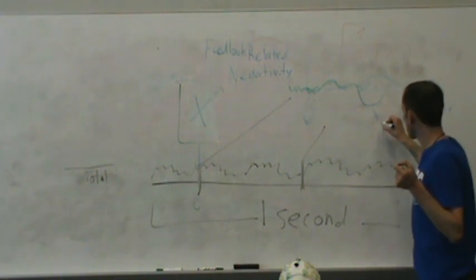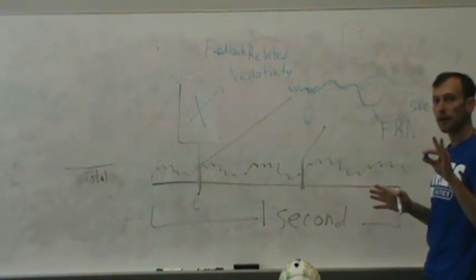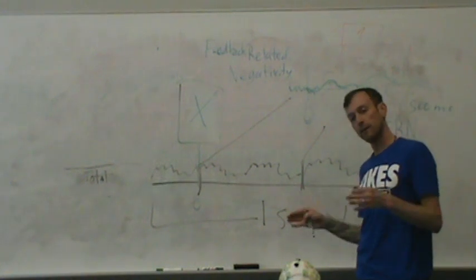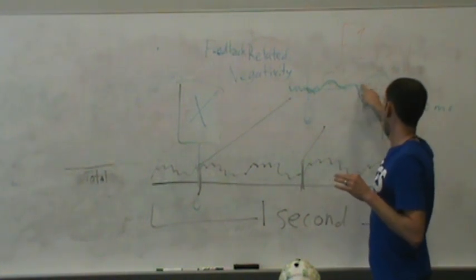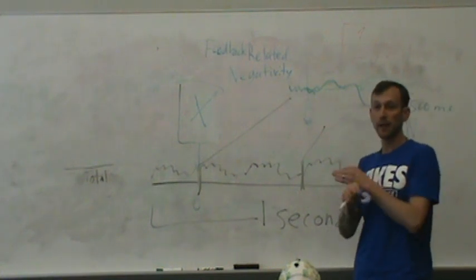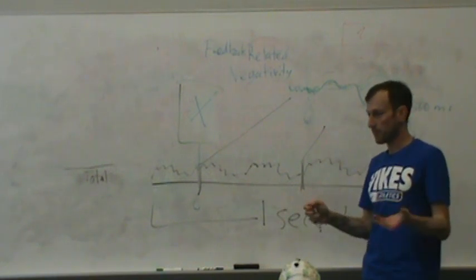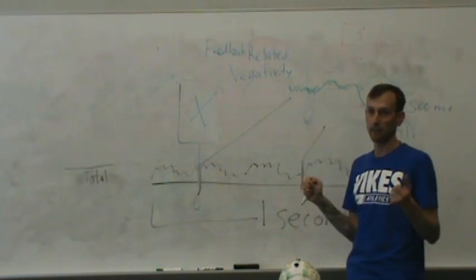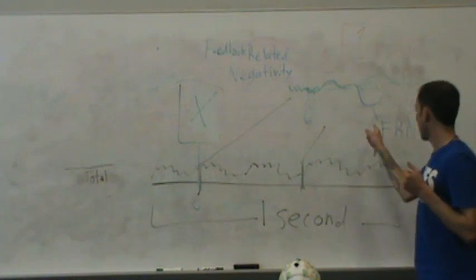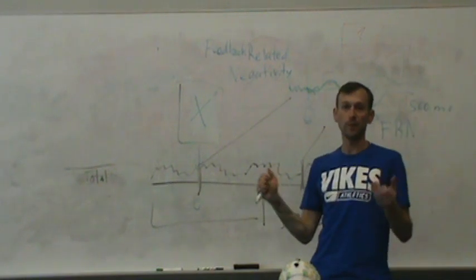And this is known as the FRN component, feedback-related negativity. An important note, the fact that it's negative when I get negative augmented feedback, and the fact that there's a positive component when I get positive feedback is a complete coincidence. It doesn't actually have to do with the fact that one's positive feedback and one's negative. It just happens that when I get negative feedback, I get this feedback-related negativity saying, oh, you did bad.